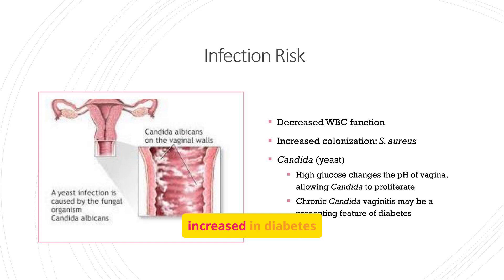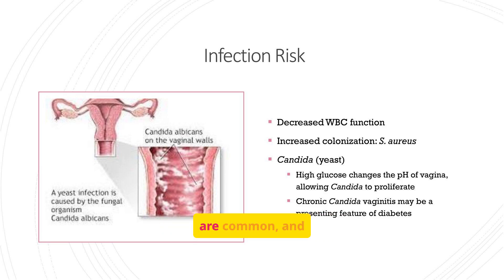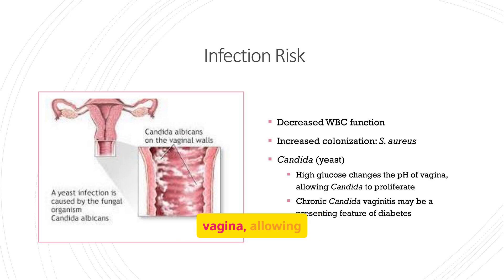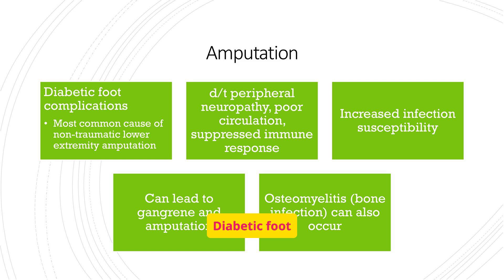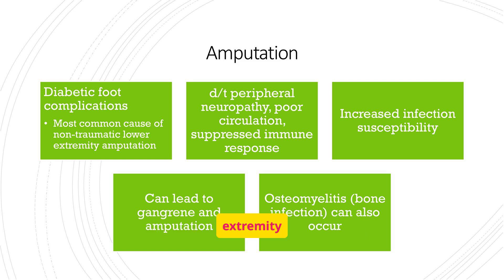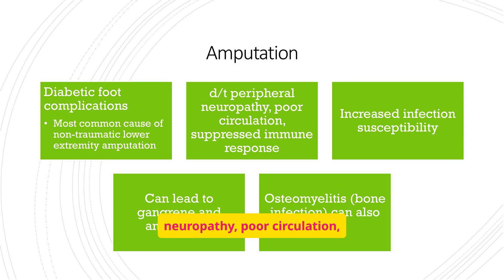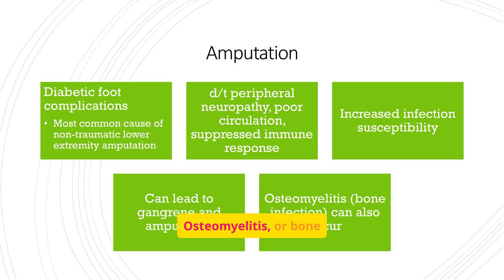Infection risk is increased in diabetes due to decreased white blood cell function. Candida infections are common, and high glucose levels can change the pH of the vagina, allowing candida to proliferate. Diabetic foot complications are the most common cause of non-traumatic lower extremity amputation, due to peripheral neuropathy, poor circulation, and a suppressed immune response. Osteomyelitis, or bone infection, can also occur.